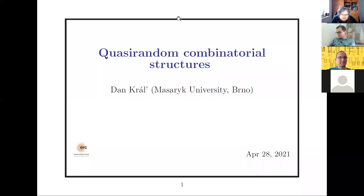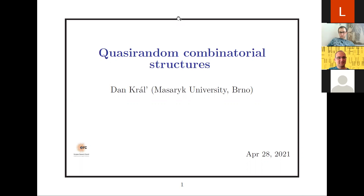Today we have a distinguished guest, Daniel Kral, from Masaryk University in Brno. Dan is quite a figure in our combinatorial and TCS community. He has a number of great results and is really extremely active, I would say, over the last decade. From what I know, he spent quite some time recently on graph limits, also known as graphons, but I know Dan better from the graph coloring side.